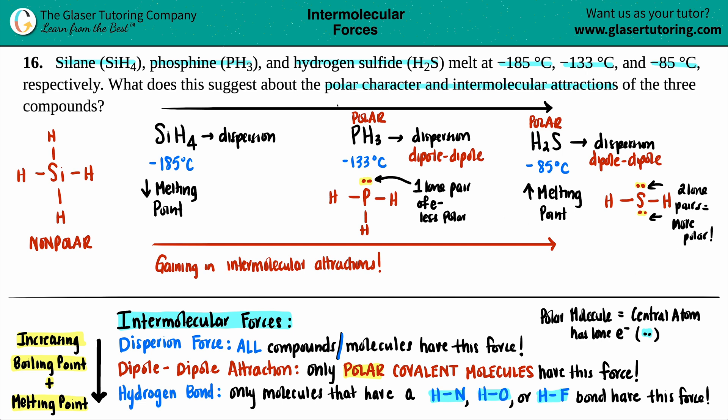It says, what does this suggest about the polar character and intermolecular attractions? You're gaining in intermolecular attractions, and you're also going to be gaining in polar character because the more lone electrons that you have in the center, the more polar that molecule is going to be.